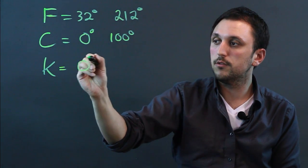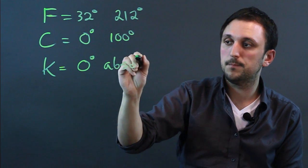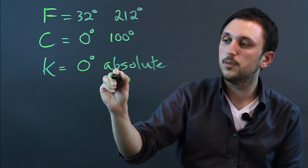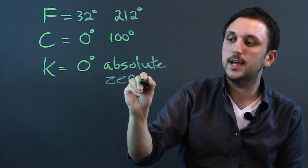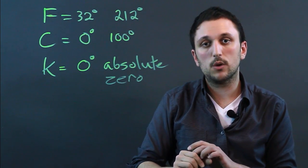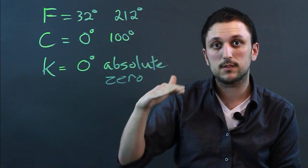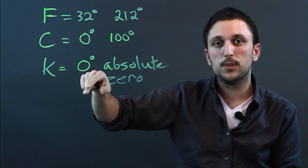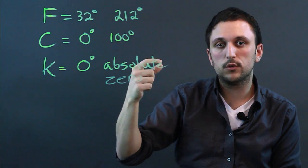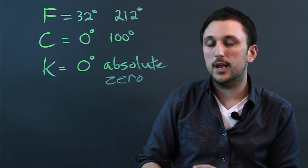Kelvin, zero degrees, is absolute zero. So that means that when motion or heat, kinetic energy stops, that is zero degrees. One degree is very little, two degrees is a little bit more, and on upwards.